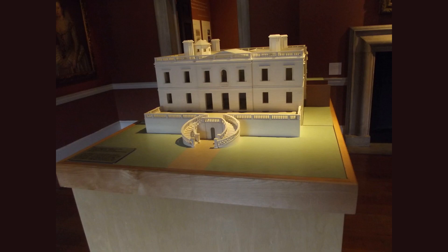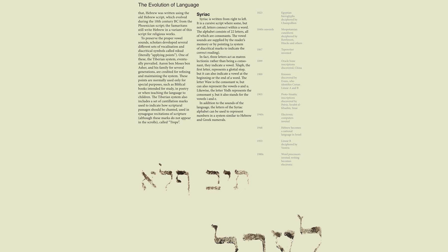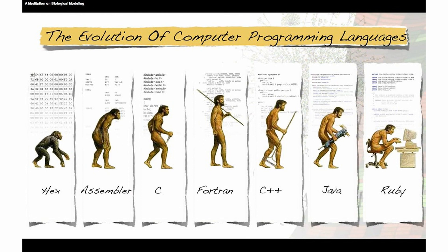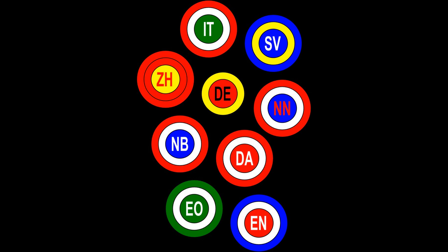One of the ways in which mathematics is involved in language evolution is through the use of evolutionary models. Evolutionary models are mathematical models that simulate the process of language change over time. These models allow researchers to test hypotheses about the factors that drive language change and make predictions about how languages will change in the future. For example, researchers have used evolutionary models to study the way that languages change in response to contact with other languages. These models have helped researchers to understand how languages borrow words and grammatical structures from other languages and how this process affects the evolution of languages over time. Another way in which mathematics is involved in language evolution is through the use of phylogenetic methods. Phylogenetic methods are mathematical methods used to reconstruct the evolutionary history of languages, allowing researchers to study the relationships between different languages and understand how they have evolved over time. For example, researchers have used phylogenetic methods to study the relationships between different European languages such as English, Spanish and Hindi.